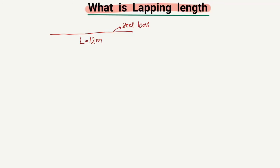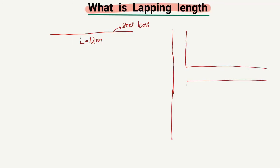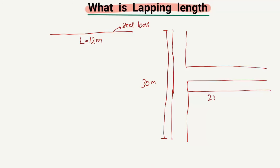But if you look at a construction site, we have buildings — for example, this is a column, here is a beam, and then again this is a column. If I consider the height of this column from top to bottom, it is for example 30 meters, and this beam is going along with a length of more than 25 meters. The height of the column is 30 meters, but the standard length of a steel bar is only 12 meters.